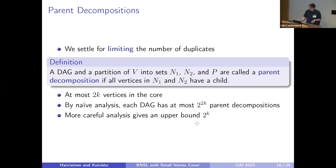We define these parent decompositions, which are partitions of the vertex set into those sets N1, N2, and P, such that all the vertices in the core must have a child. Because this core can contain at most 2k vertices, it is trivial to show that there can be at most 2 to the power of 2k parent decompositions. A bit more careful analysis shows actually that the upper bound is 2 to the power of k. This upper bound is tight for certain kinds of chain graphs.